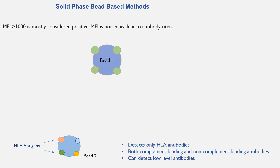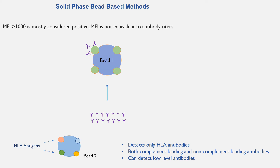Up to now, we have discussed identification of HLA antibodies with help of HLA antigens present on cell surface. However, we can also attach these antigens on the surface of beads and identify HLA antibodies with help of these beads. This method is called the solid phase bead-based method. In this case, bead 1 has one type of HLA antigen on its surface, while bead 2 has different types of HLA antigens. When we add these beads to recipient serum, if the serum has antibodies against these HLA antigens, the antibodies will bind to HLA antigens on the surface of the beads.